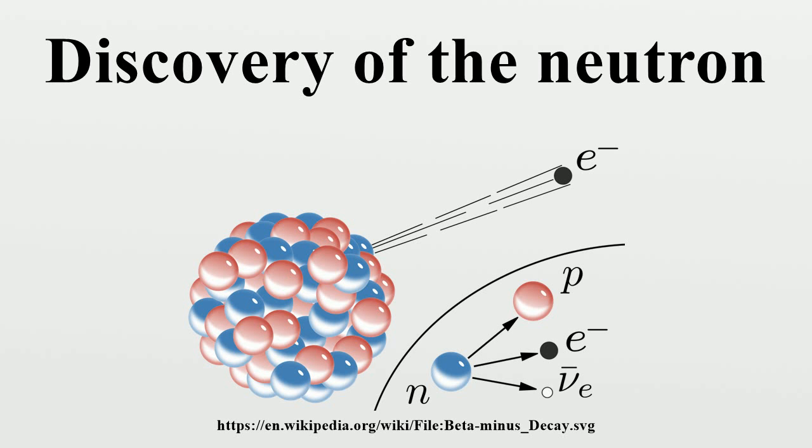The following year, Irène Joliot-Curie and Frédéric Joliot in Paris showed that if this unknown radiation fell on paraffin, or any other hydrogen-containing compound, it ejected protons of very high energy. This observation was not in itself inconsistent with the assumed gamma ray nature of the new radiation. However, a detailed quantitative analysis of the data became increasingly difficult to reconcile with such a hypothesis.